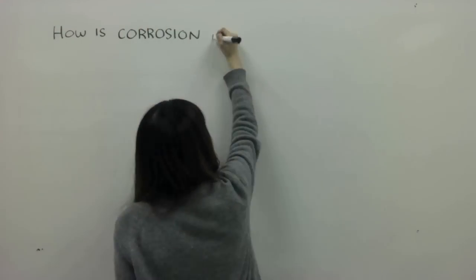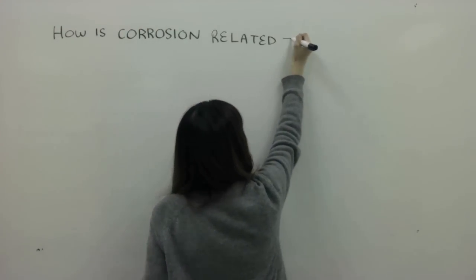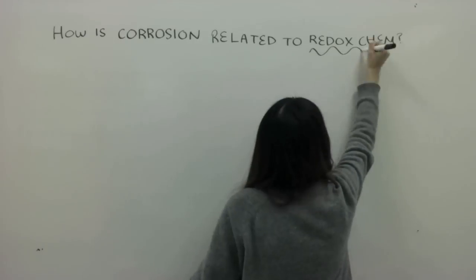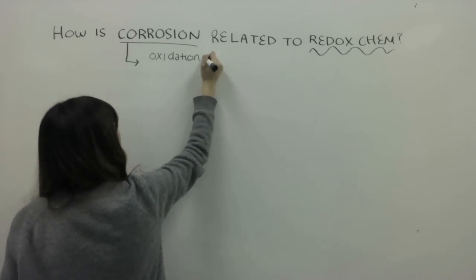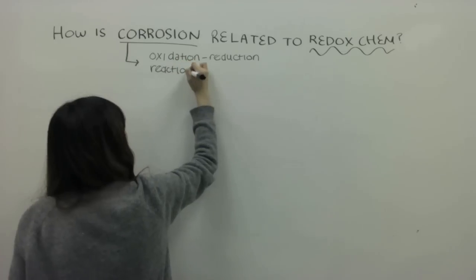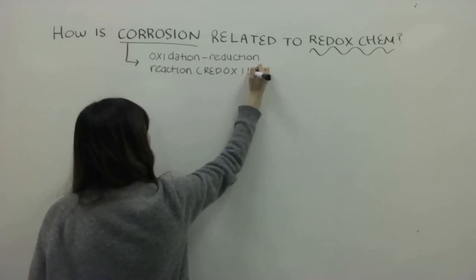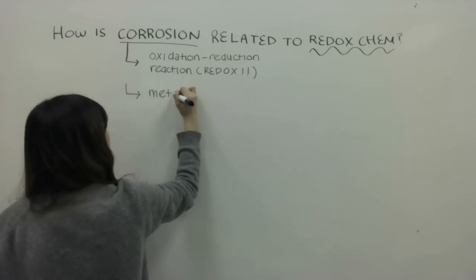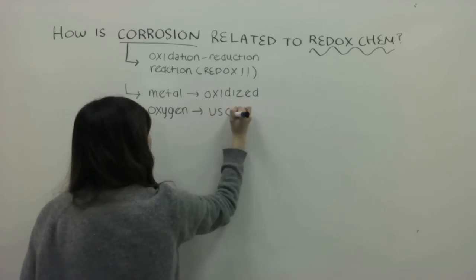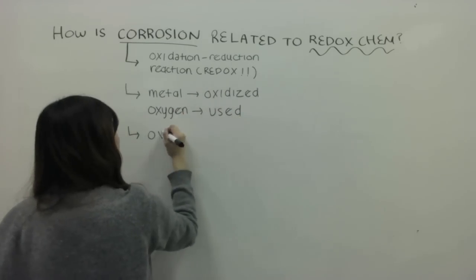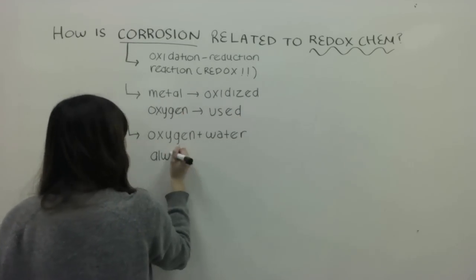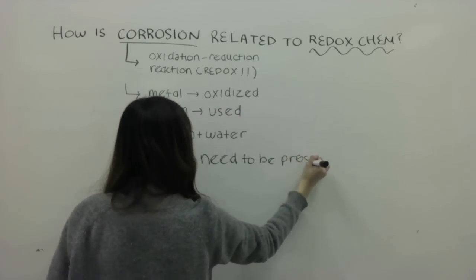How is corrosion related to redox chemistry? Corrosion is an oxidation-reduction reaction — in other words, a redox reaction — where metal is being oxidized and oxygen is being used. Oxygen and water always need to be present in the reaction.